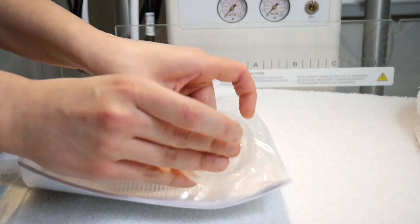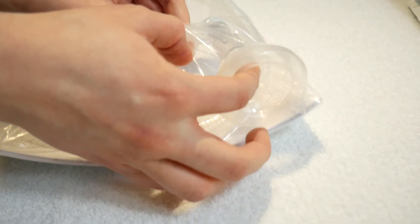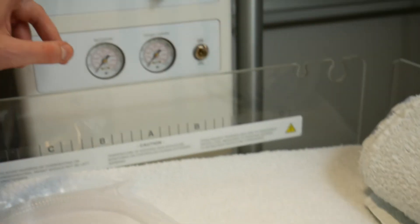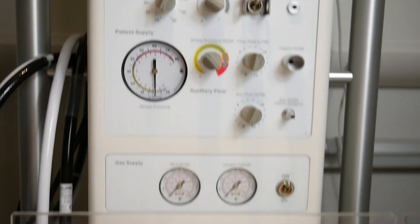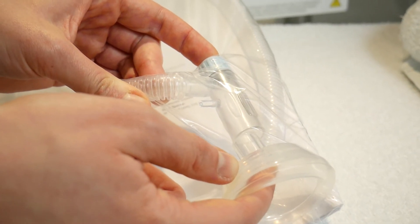Once the T-piece is connected to the gas outlet, you can test your pressures. First by occluding the valve inside the mask, the needle will move to your desired level of PEEP. To check your peak inspiratory pressure, occlude the valve at the top of the T-piece.